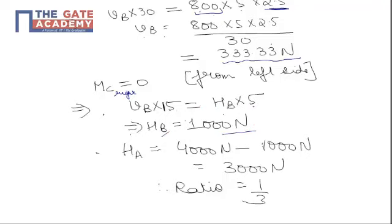Now, how to compute HA? We know that summation of forces in horizontal direction they have to be equal to zero. So HA comes out as 4000 minus 1000 that is 3000 N.